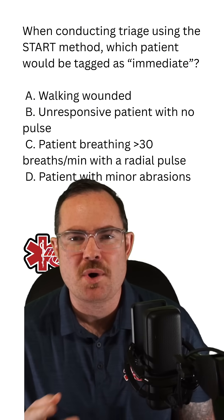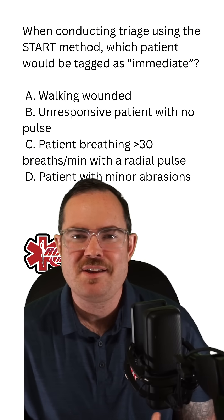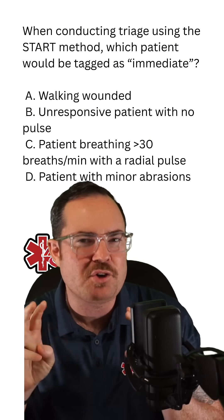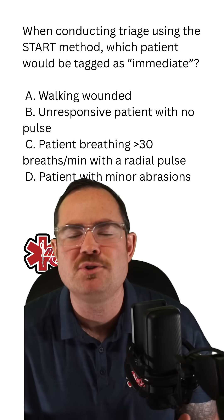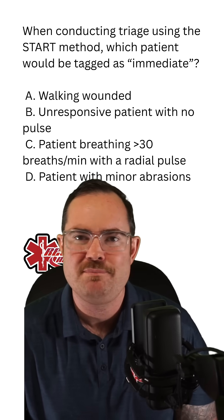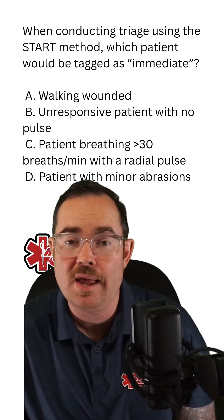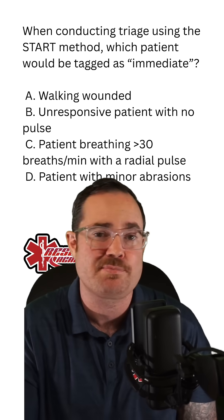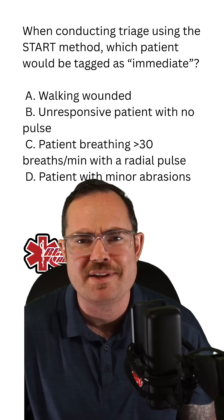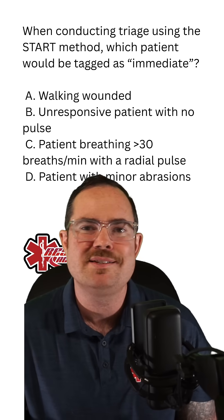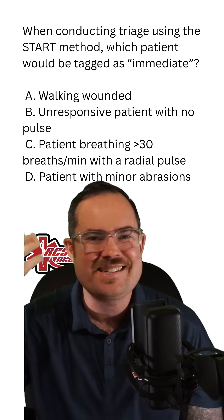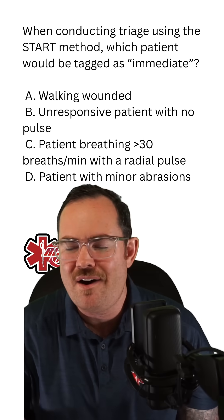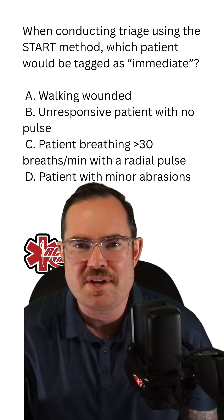Yellow tags are similar to our green tags — they don't meet our red criteria, but they're unable to ambulate. Maybe they have a broken leg or a sprained ankle, whatever the case might be. This is considered delayed. None of these answer choices are patients with a yellow tag.